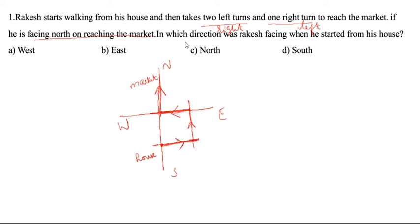As per the question, we have drawn the direction details. In which direction was Rocky facing when he started from his house? You see, the direction is this side — East side. So East is the answer.